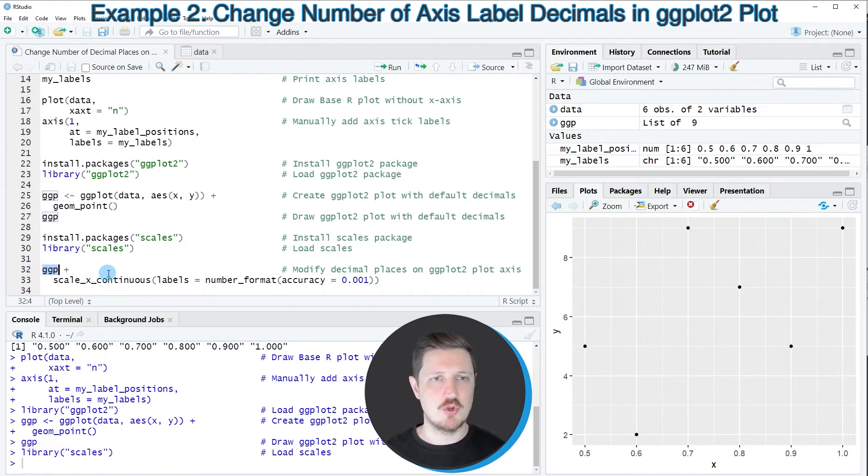And then in the next step, I'm using my plot object ggp that I have created before. And I'm adding to this the scale_x_continuous function. And within this function, I'm specifying the labels argument. And I'm setting this argument to be equal to the number_format function. And within this function, I'm specifying the accuracy argument to be equal to 0.001.